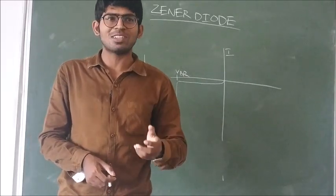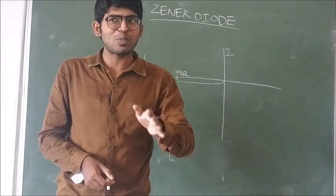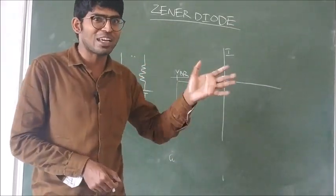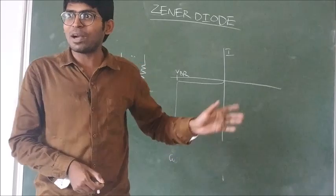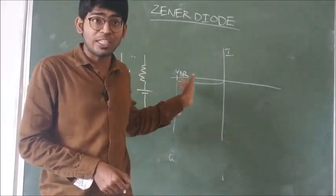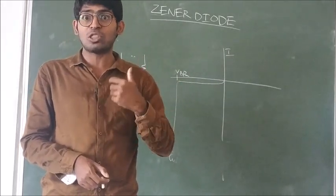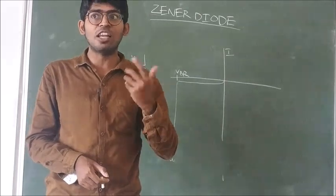A diode means whenever we are joining a P-type semiconductor with an N-type semiconductor, we call it a diode. But this Zener diode, specifically, even though it is a PN diode, both the P-type and N-type semiconductors are heavily doped.